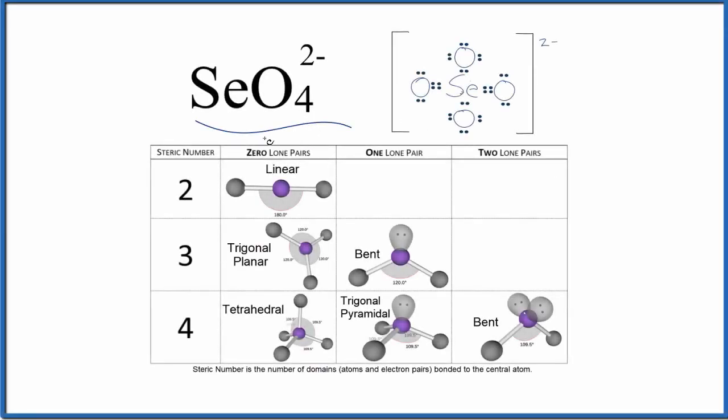Let's take a look at the molecular geometry for SeO4^2-, the selenate ion. We'll start with a Lewis structure, a valid Lewis structure. If you need help writing the Lewis structure for SeO4^2-, there's a link in the description and at the end of the video.